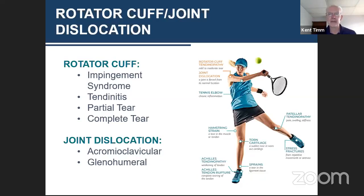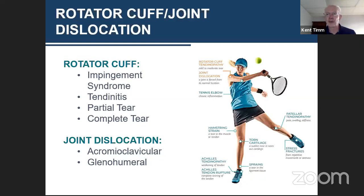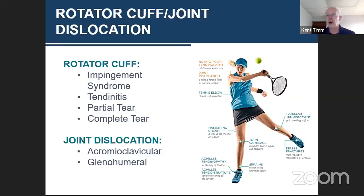If left untreated, tendonitis can develop into a partial tear of the rotator cuff. This would be a scenario where not only would the person have problems playing tennis, racquetball, or pickleball, they'd have great difficulty just doing routine activities such as simply picking up a toothbrush to brush their teeth. And if left untreated, the end stage would be a complete tear of the rotator cuff, which is certainly not desirable — it requires surgical correction, and your shoulder becomes essentially unusable for basic activities.